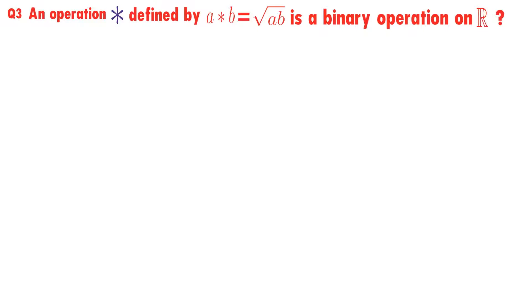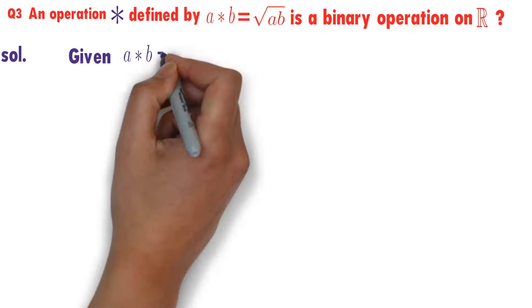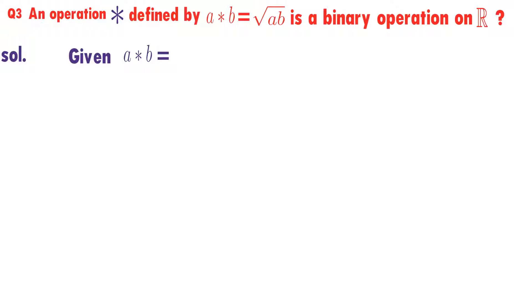we need to check if star is a binary operation on set of real numbers or not. Given that a star b equals root over ab.